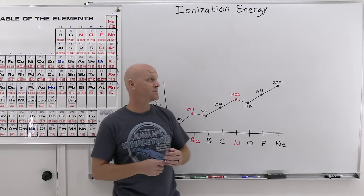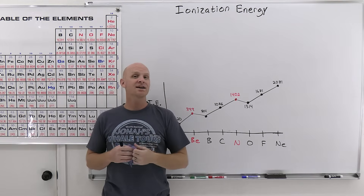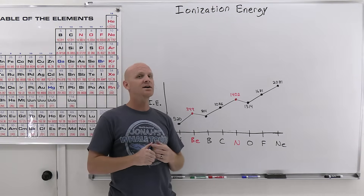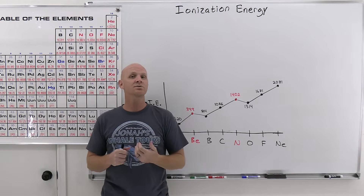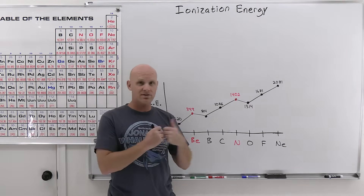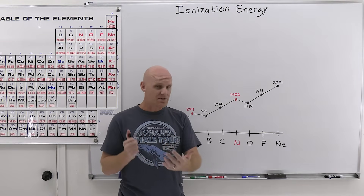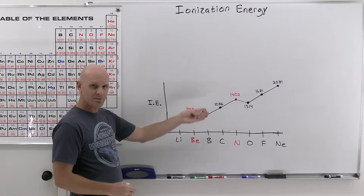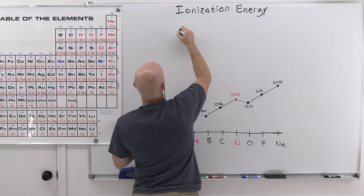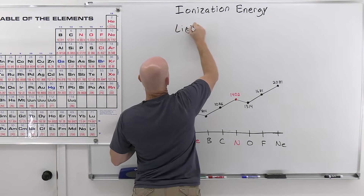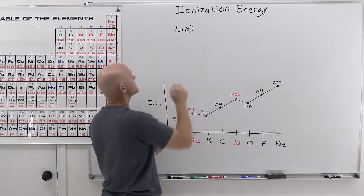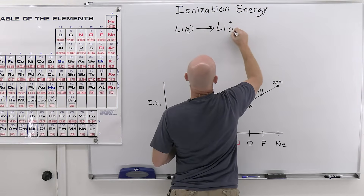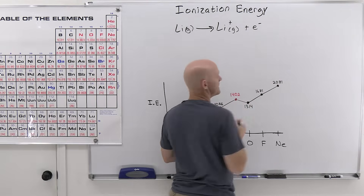Ionization energy is the energy it takes to remove an electron — more technically, it is the energy it takes to remove an electron from a gaseous atom to form a gaseous ion. We can represent this with a chemical reaction. For lithium, you'd start with a gaseous lithium atom, remove an electron, and form a gaseous lithium ion with the electron as a product.